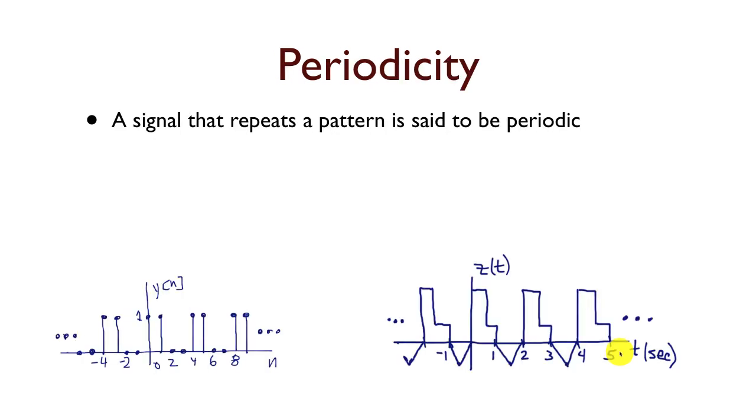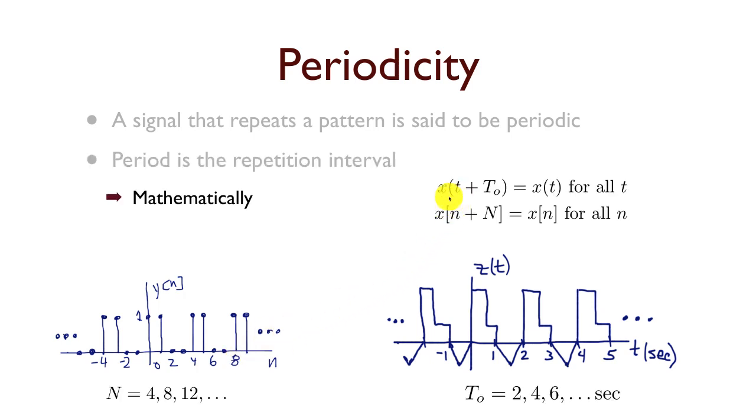Now periodicity is an important property of signals that we're going to see quite often. A signal that repeats a pattern is said to be periodic, like these two signals that I've pictured down below. The period of the signal is the interval at which it repeats. Mathematically, we can write that x(t + T0) equals x(t) for all values t and some value of T0.